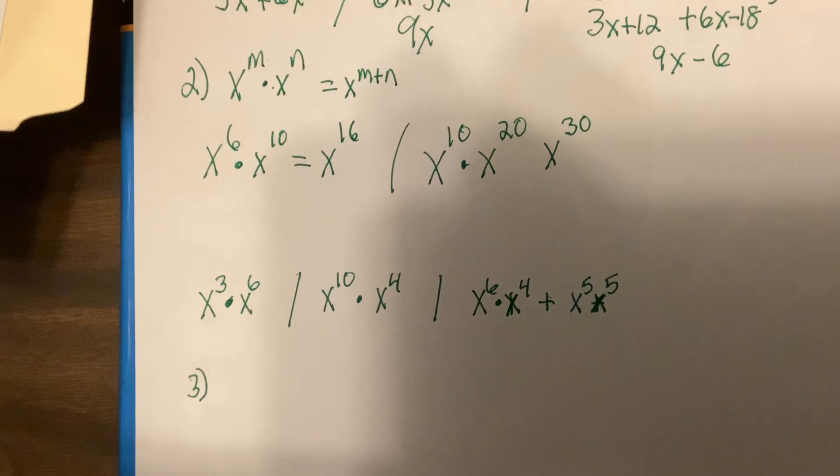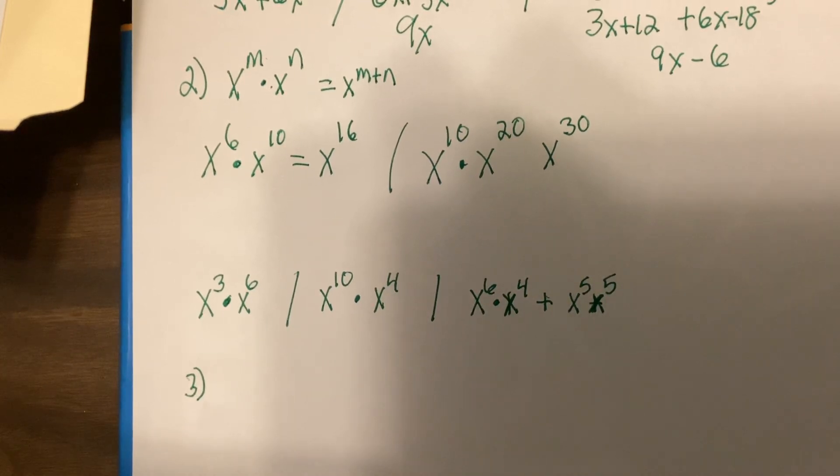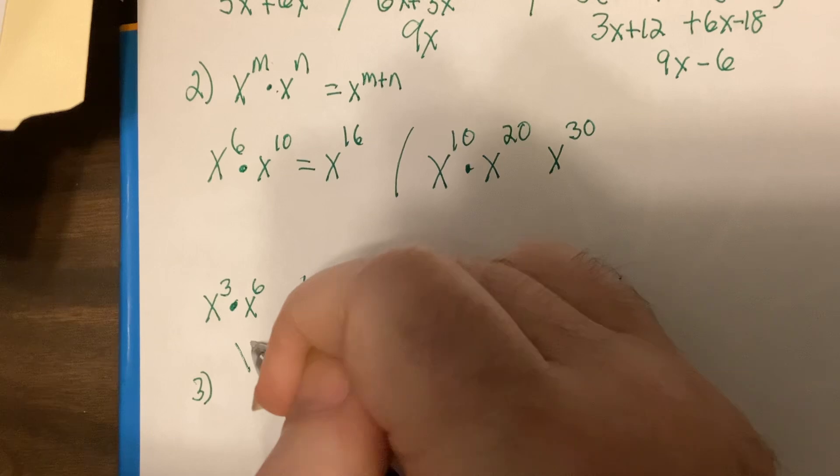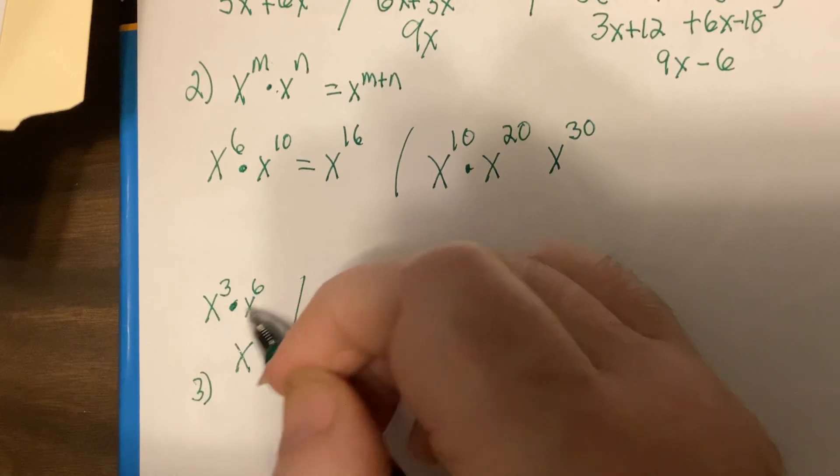So, here's three problems. Do them for me. Freeze the video, and then turn it back on. Okay, so this should be X to the 9th. When you multiply two things, same base, you add the powers.